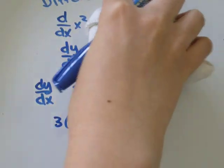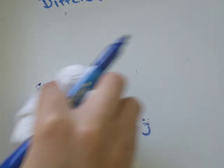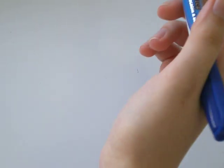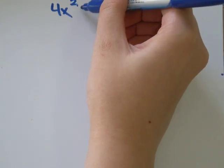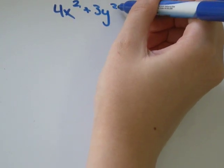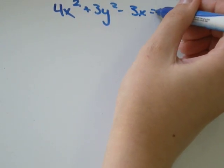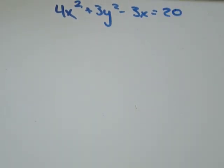So let's do one that has x's and y's in it at the same time. It's really not too bad. Let me pull my board down. Okay, 4x² + 3y² - 3x = 20. And we are just going to take the derivative of each side.